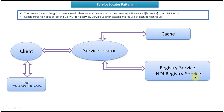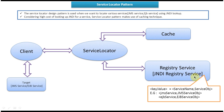An example of Registry Service is JNDI Registry Service. In JEE, mostly we will use JNDI Registry Service to store the service objects. The service object is stored in JNDI Registry as a key-value pair — the key is the service name and the value is the service object. For example, JMSService is the service name and its value is the JMSService object, and EJBService is the service name and its value is the EJBService object.